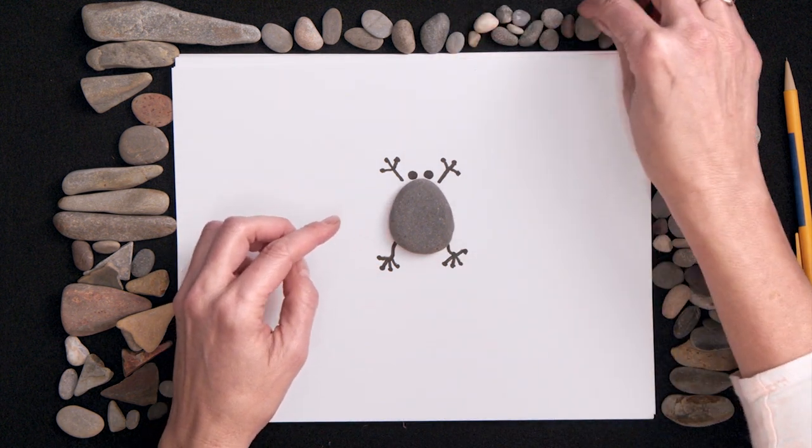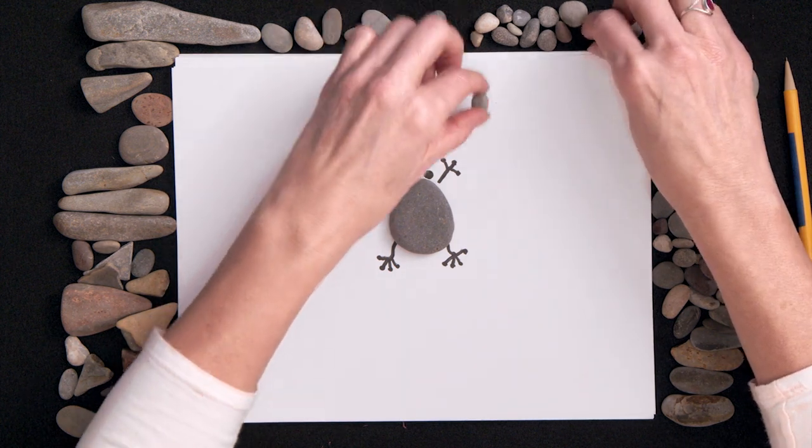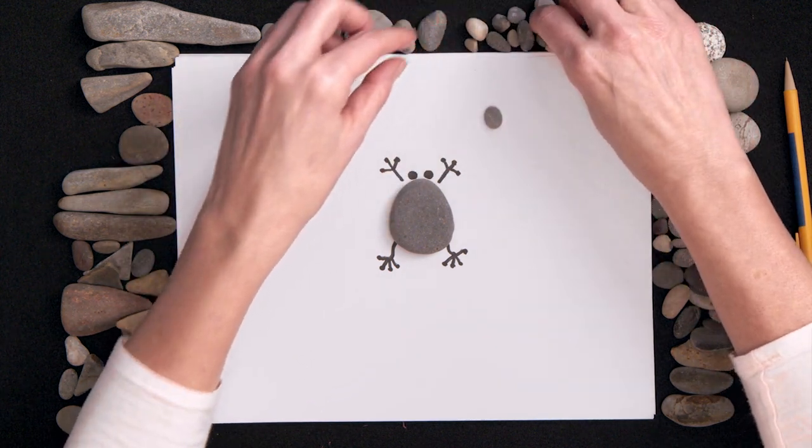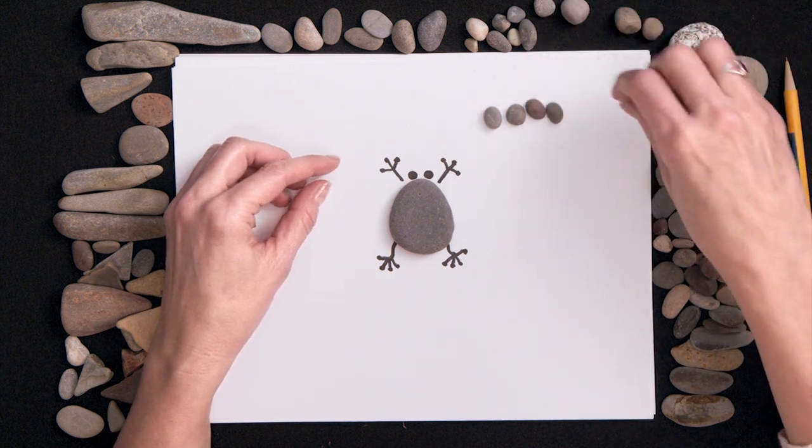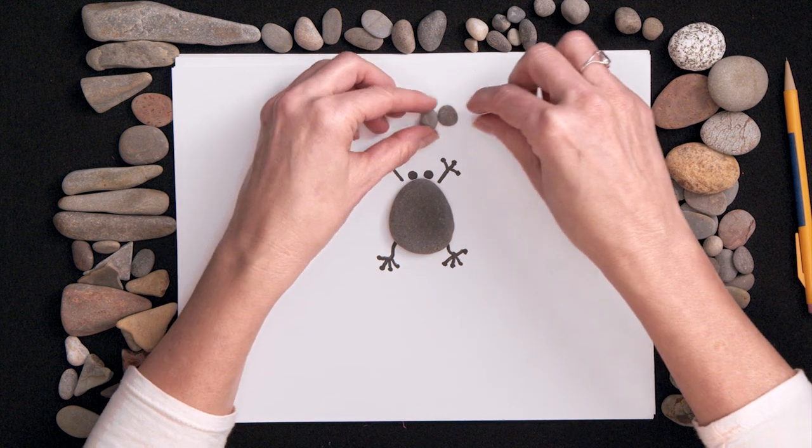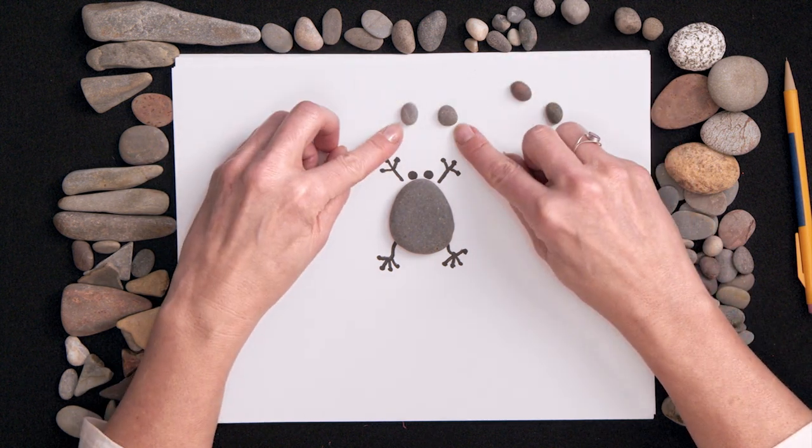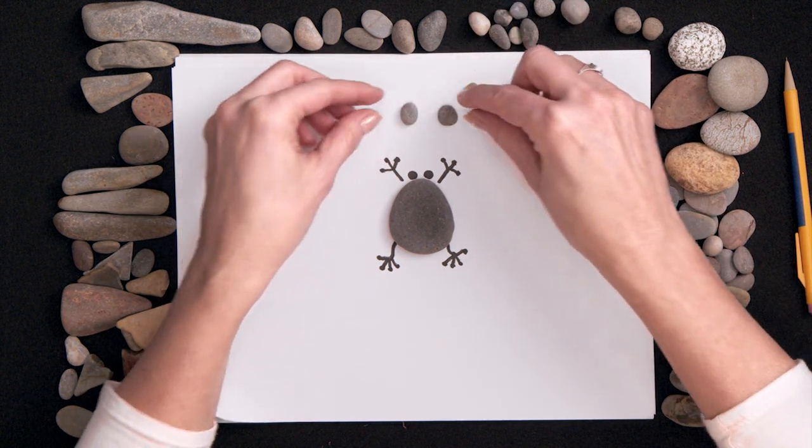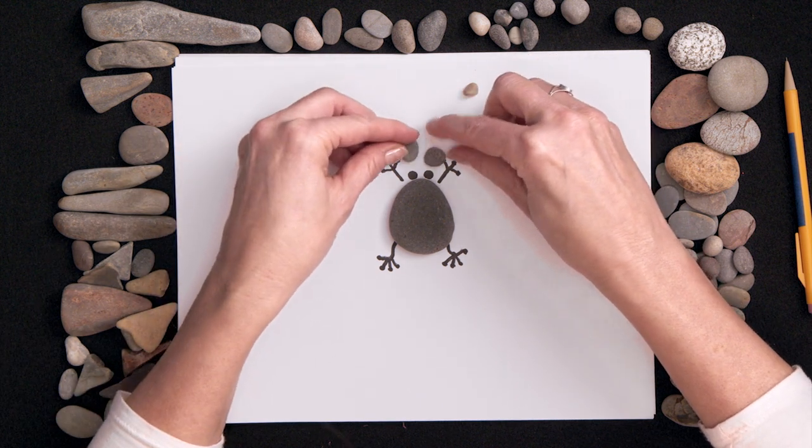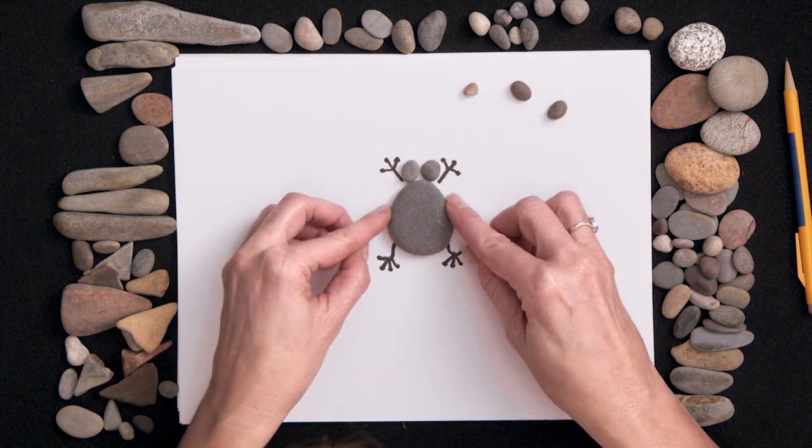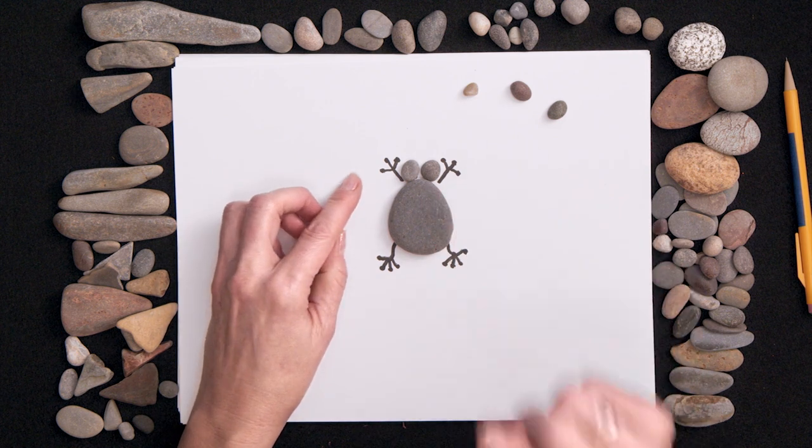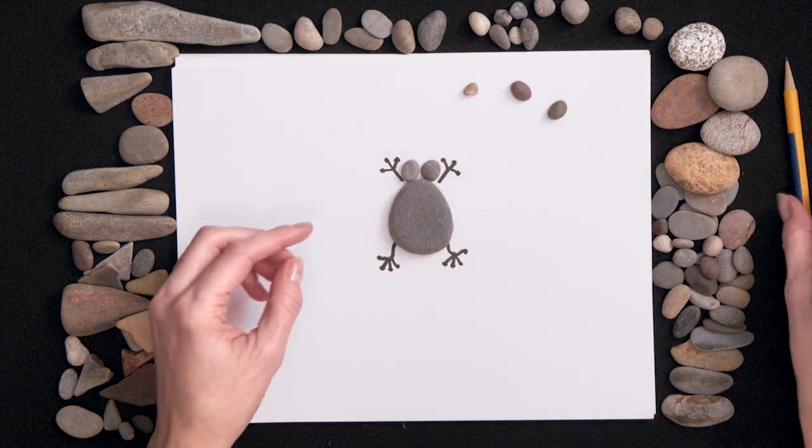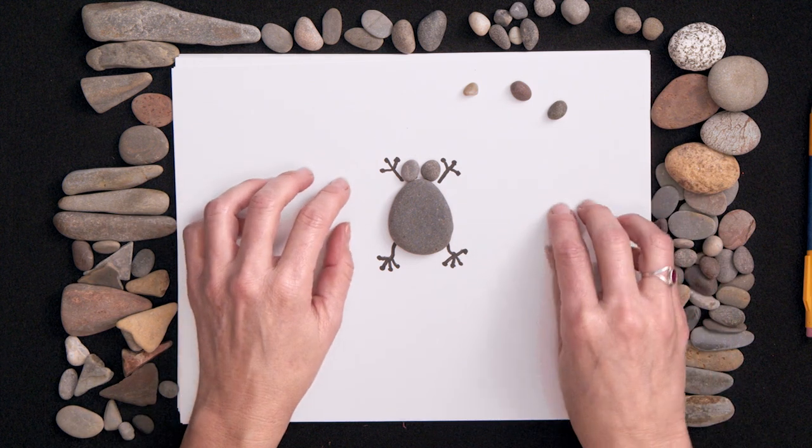If you happen to have teeny tiny little rocks, and I've got some little ones. Now, I collect my rocks every time I go outside. I look for more rocks. And sometimes when I see just gravel, that's really the best kind to find little tiny rocks. What if we use these for eyeballs? Let's stick those on and see what it looks like. Is that a cute frog or what? I love it. So that's how you make a frog.